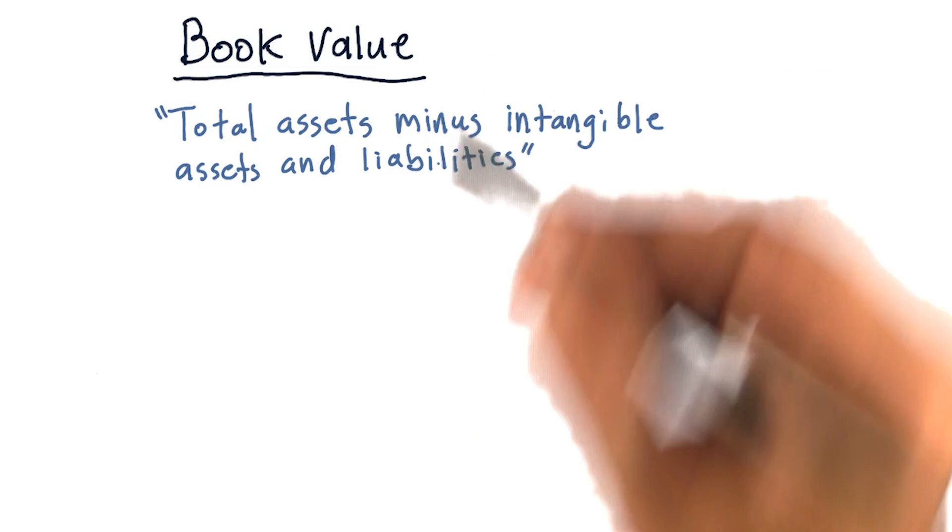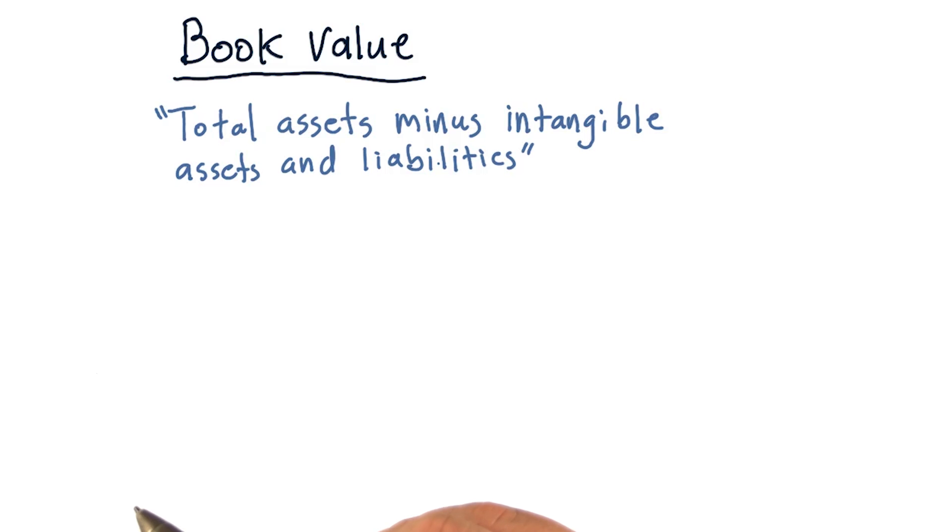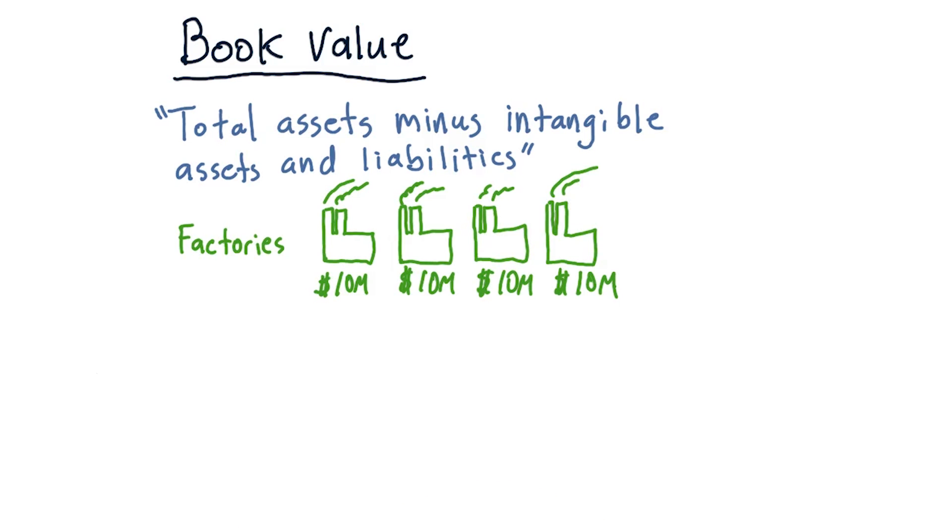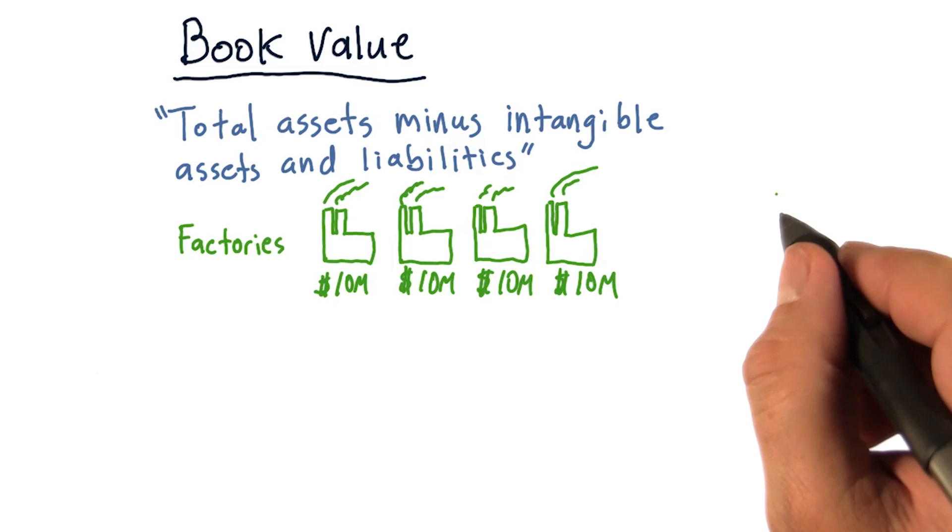So let's consider what is the book value for an example company. Let's say the company owns four factories and each of these factories is worth about $10 million. These are assets and altogether they're worth about $40 million.